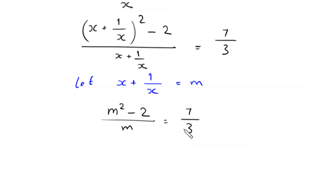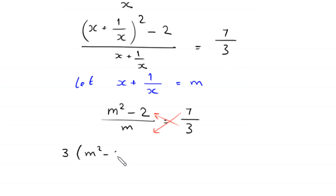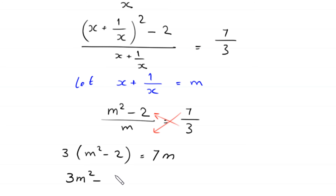We use cross multiplication: multiply 3 by (m² − 2) and multiply 7 by m. This gives 3(m² − 2) = 7m. Expanding: 3m² − 6 = 7m.